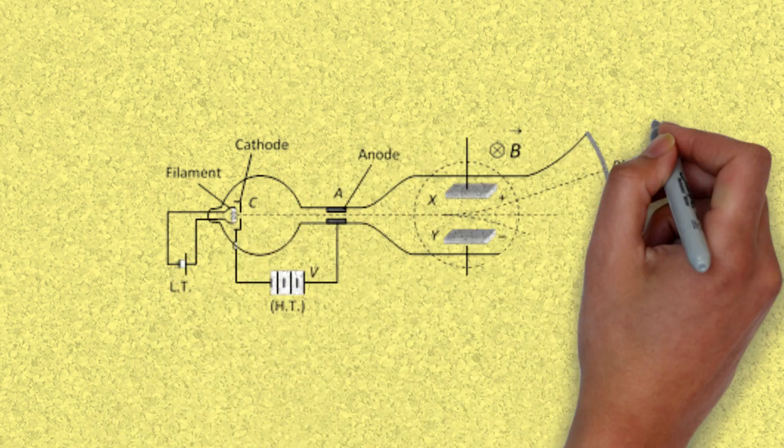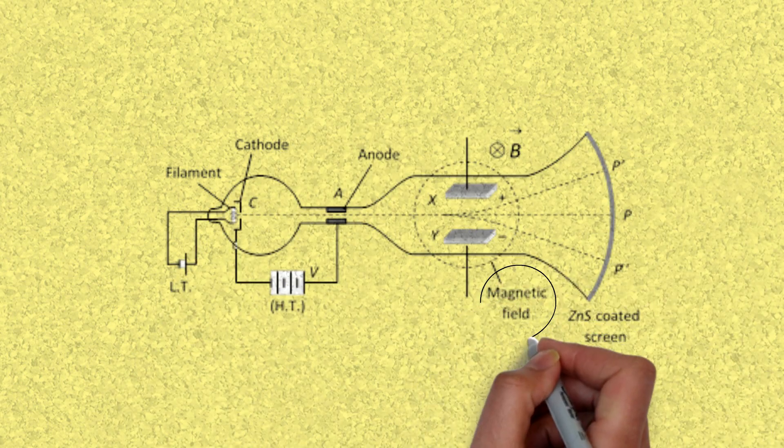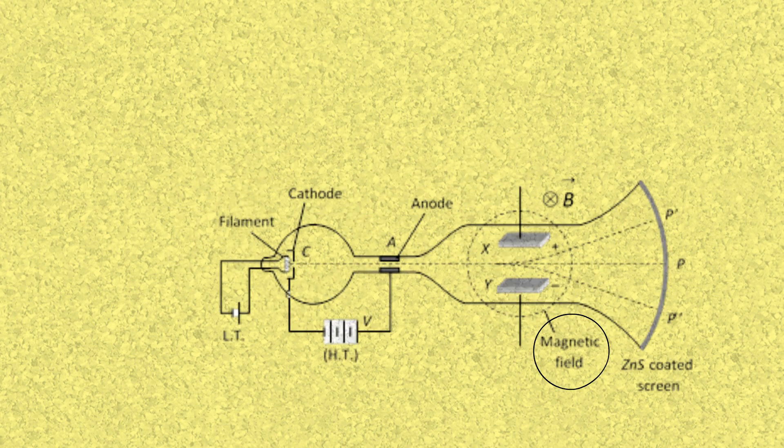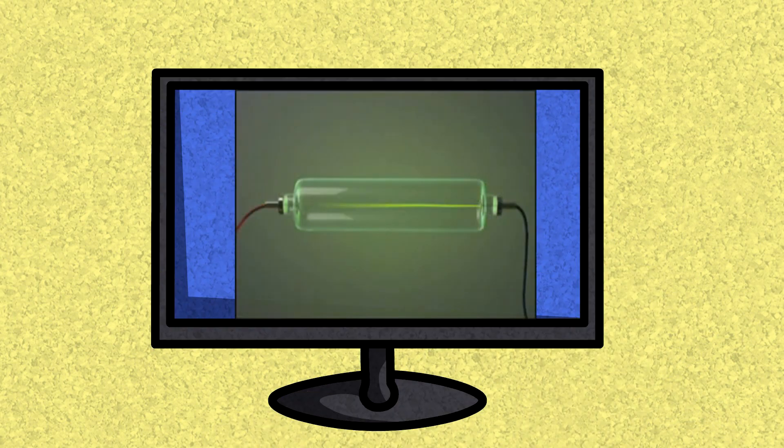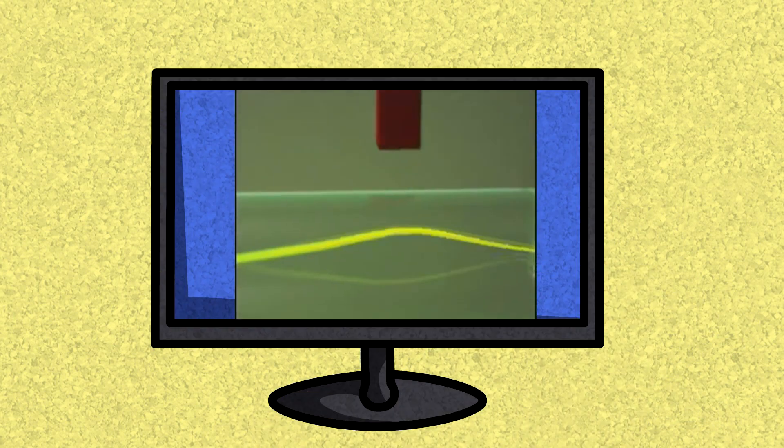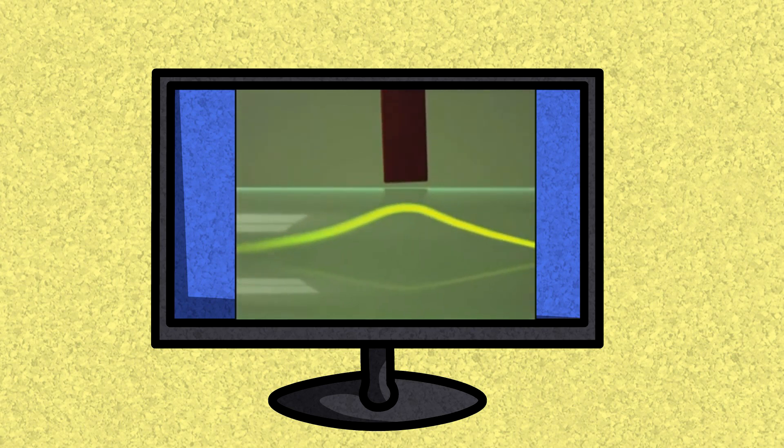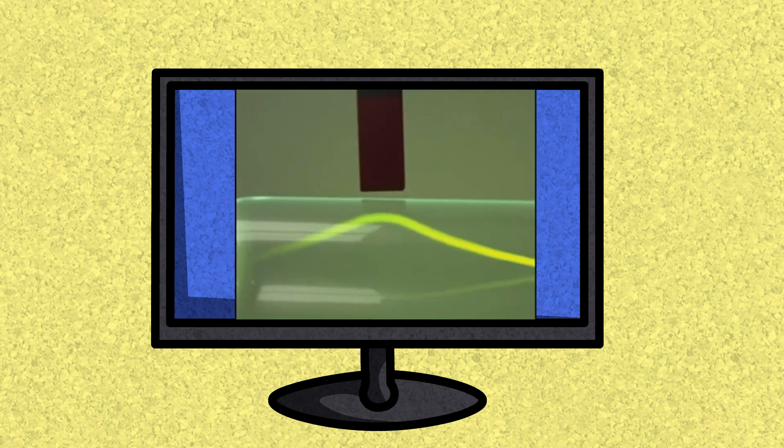To confirm this, he placed a magnet in the way of the beam, because Thompson knew electricity would be affected by a magnetic field, and the deflection happened again. At this point, we know that the beam has a negative charge.